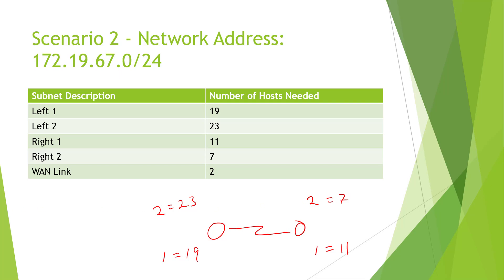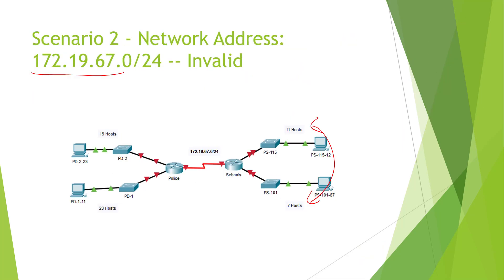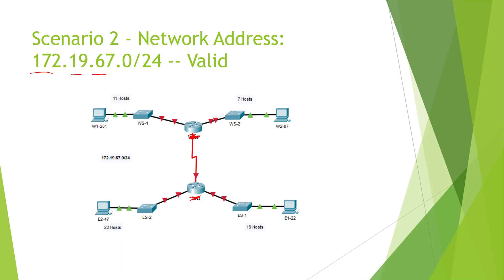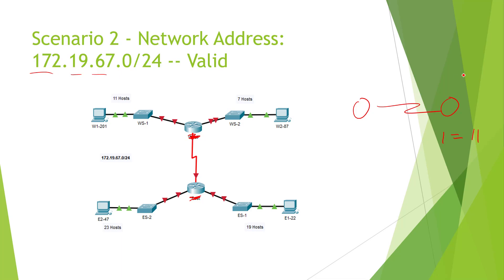Let's double-check. Scenario 2 being valid: left and right, with west being the right network. The number 1 network had to be 11, and the number 2 network had to be 7. Number 2 - 7, number 1 - 11. This is a valid example. Number 1 network has to equal 19, network 2 equals 23. Network 1 - 19. Good. Network 2 - 23. We're good.